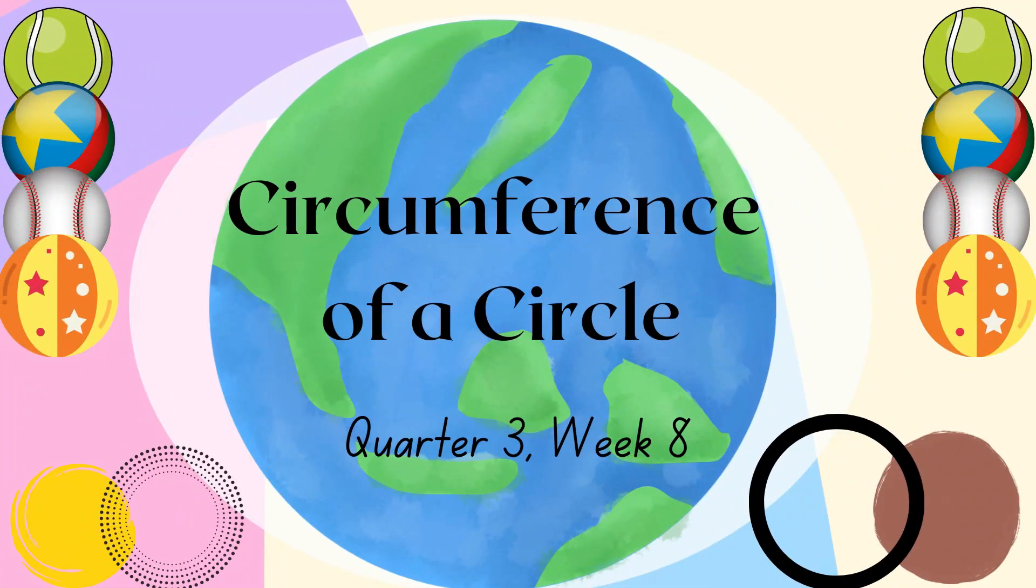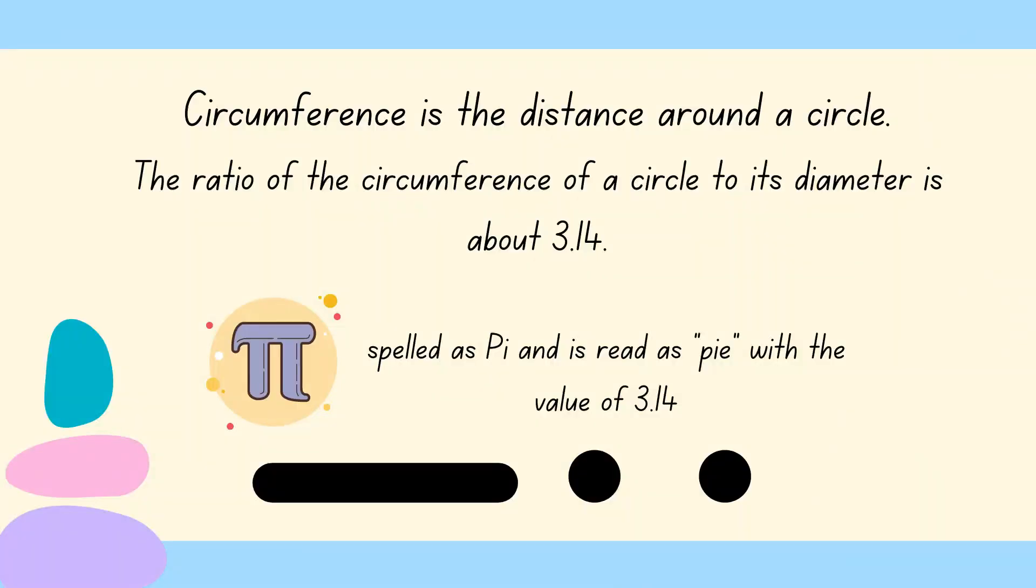So today we are now in week 8 of quarter 3 and our last topic is about the circumference of a circle. So what is circumference? Circumference is the distance around a circle. The ratio of the circumference of a circle to its diameter is about 3 and 14 hundredths.